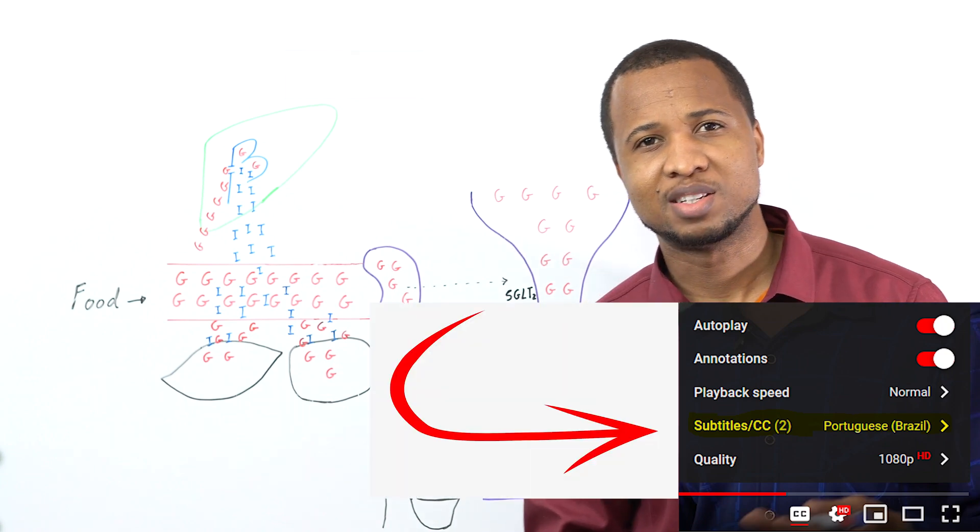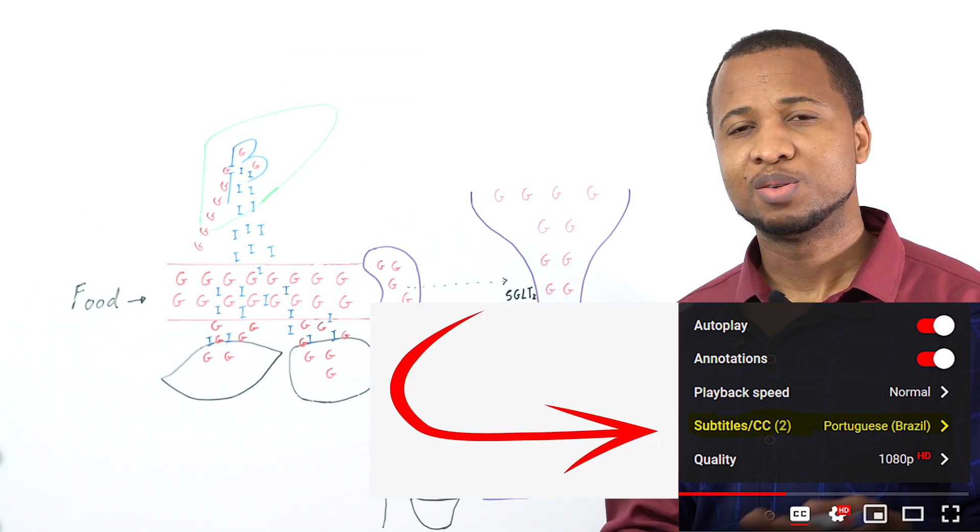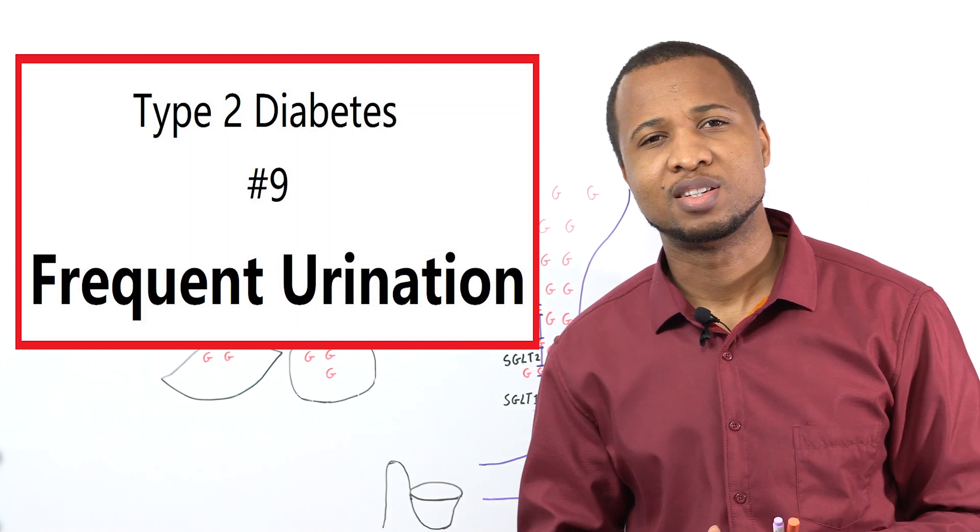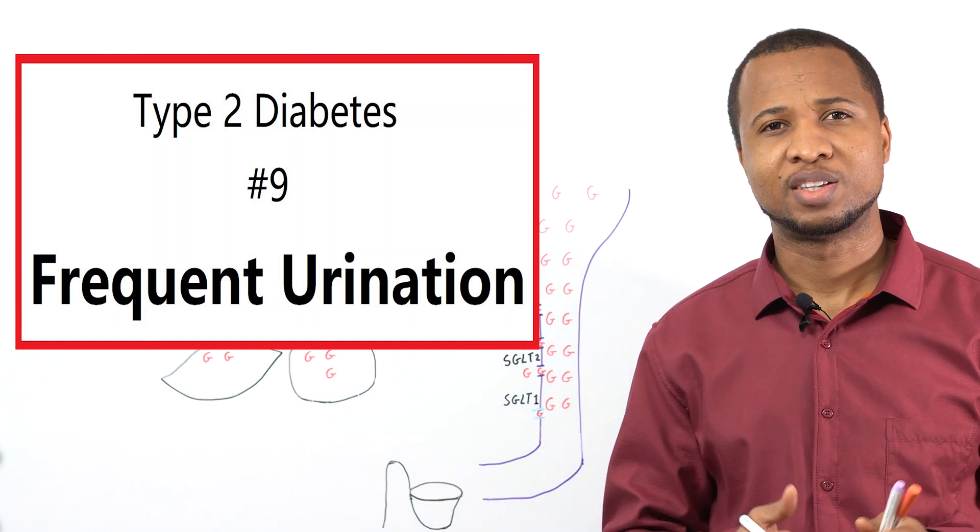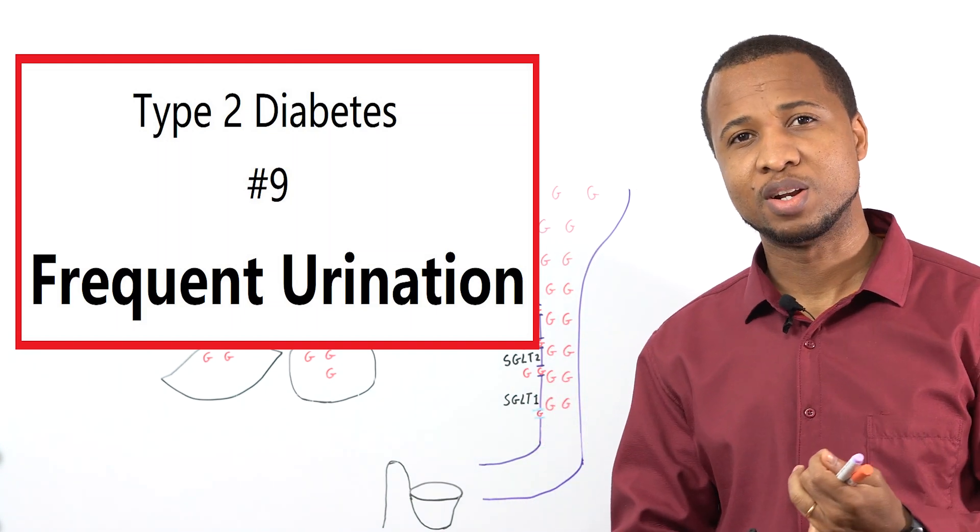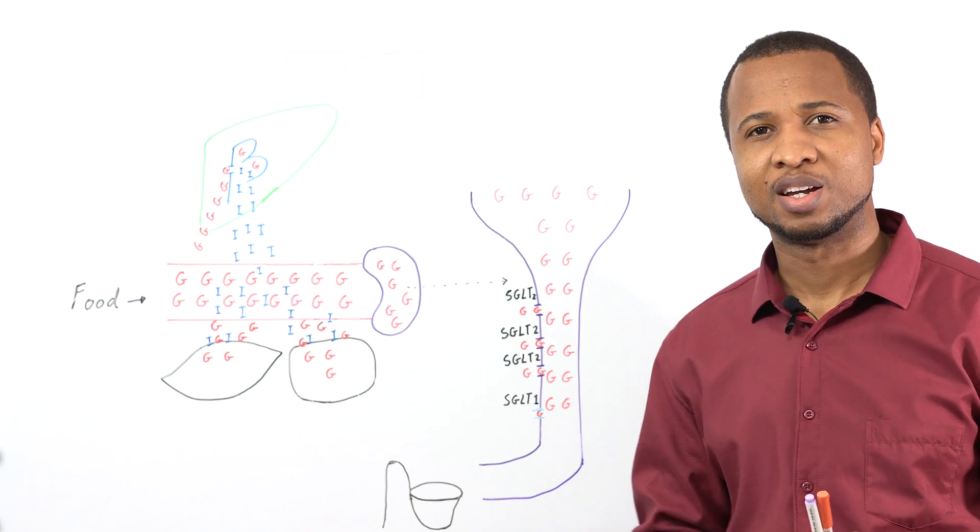Hi, welcome to Type 2 Diabetes number 9. Today I will tell you why patients with type 2 diabetes feel like urinating all the time, they have sweet urine, and they feel thirsty all the time.